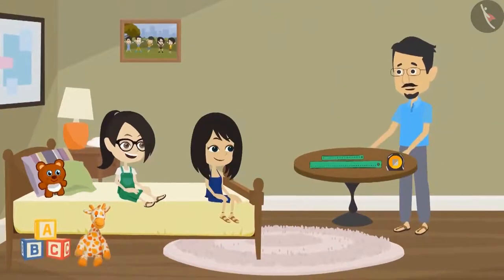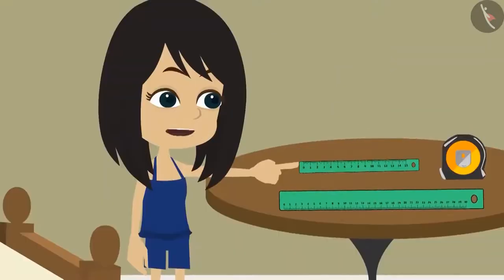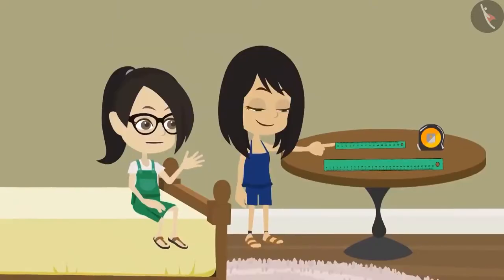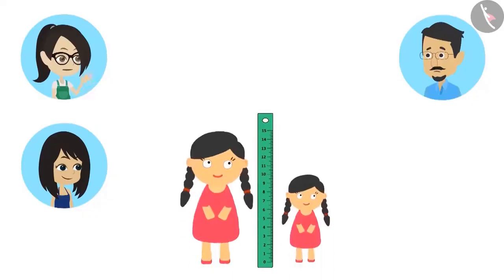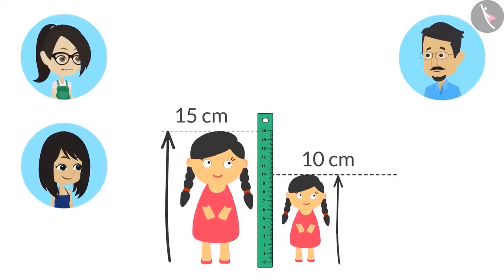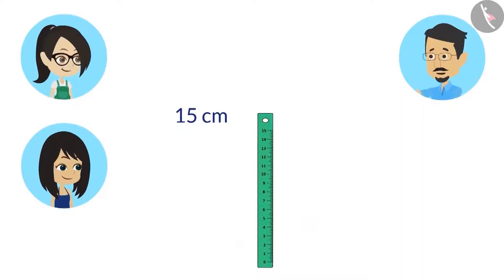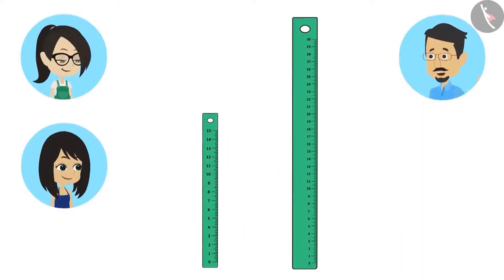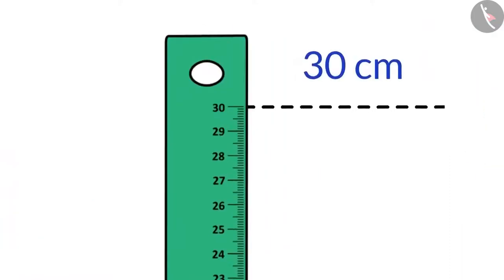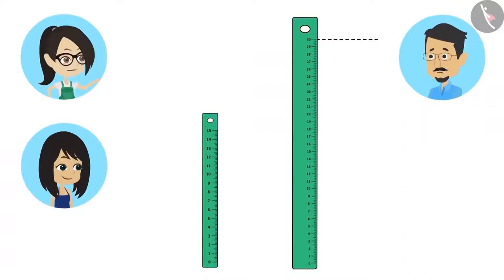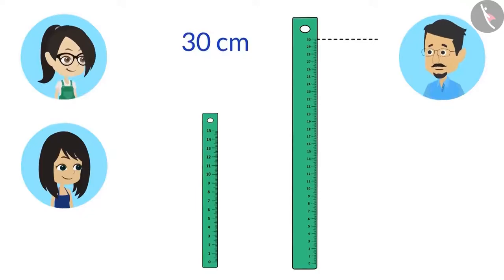Look, I have these three scales. Even we have this scale, Papa. Yes, and this is the scale we used yesterday to measure our dolls. This scale can only measure objects up to 15 centimeters in length. Now look at this scale and tell me — what length of objects can be measured using this scale? Papa, it has a mark up to 30 centimeters on it. That means it can measure objects up to 30 centimeters in length, right? Absolutely right.